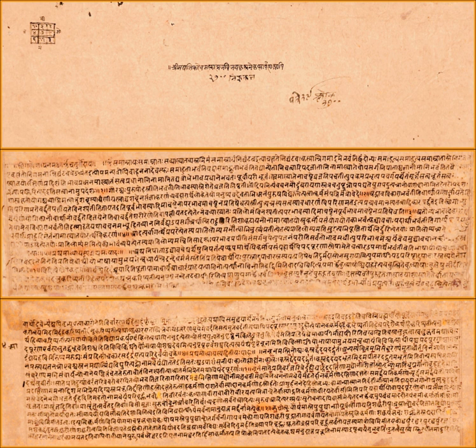Nirukta covers etymology and is the study concerned with correct interpretation of Sanskrit words in the Vedas. Nirukta is the systematic creation of a glossary, and it discusses how to understand archaic, uncommon words. The field grew probably because almost a quarter of words in the Vedic texts composed in the 2nd millennium BCE appear just once. The study of Nirukta can be traced to the last centuries of the 2nd millennium BCE, in the Brahmanas layer of the Vedic texts.